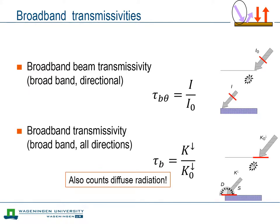Next, we consider the broadband transmissivity, that is, without reference to the beam. We use that type of transmissivity when we are interested in the total amount of radiation that made it through the atmosphere, either coming from the direction of the sun or reaching the surface as diffuse radiation.